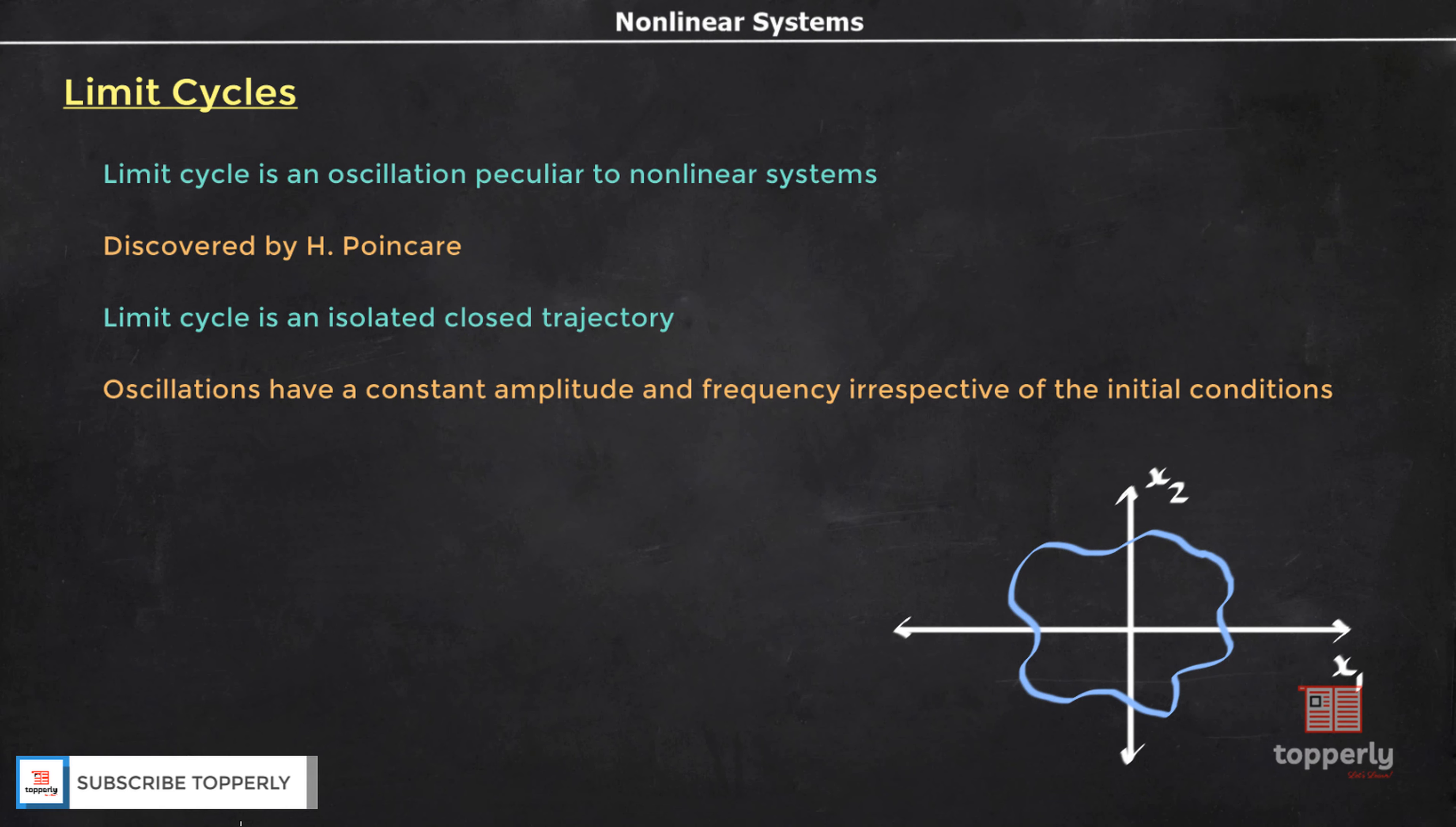The oscillatory behavior, unexplained in terms of linear theory, is characterized by a constant amplitude and frequency determined by the non-linear properties of the system. Limit cycles are distinguishable from linear oscillations in that their amplitude is independent of initial conditions. If a system has a stable limit cycle, the system trajectories will tend to fall into the limit cycle regardless of the initial conditions and input function. The system trajectories from nearby fall into the limit cycle irrespective of the initial conditions.